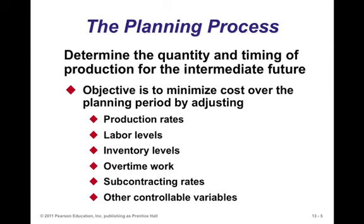We need to understand what the capacity options are, have a forecast of the demand, and understand the cost drivers so we can create a capacity strategy that minimizes costs over the planning period. The planning process involves determining the quantity and timing of production for the intermediate future — six months, 12 months, 18 months. Costs are typically driven by things like production, labor, inventory, overtime, the use of subcontracting, and other controllable variables.